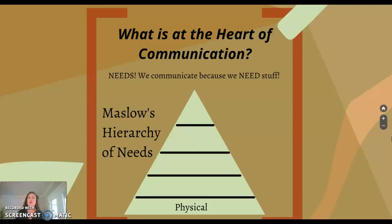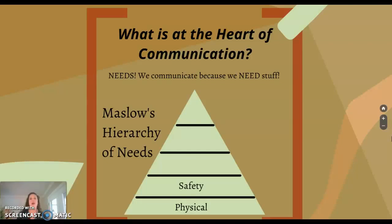Coming back to Maslow, we've got our physical needs — food, water, shelter. When a baby is hungry it cries, and as an adult you say 'I'm hungry.' We communicate needs to other people because we need them to help fulfill those needs. For safety needs, once you have shelter you want to protect it — like ADT stickers in people's windows, which is a non-verbal way of communicating that they're trying to protect that space.